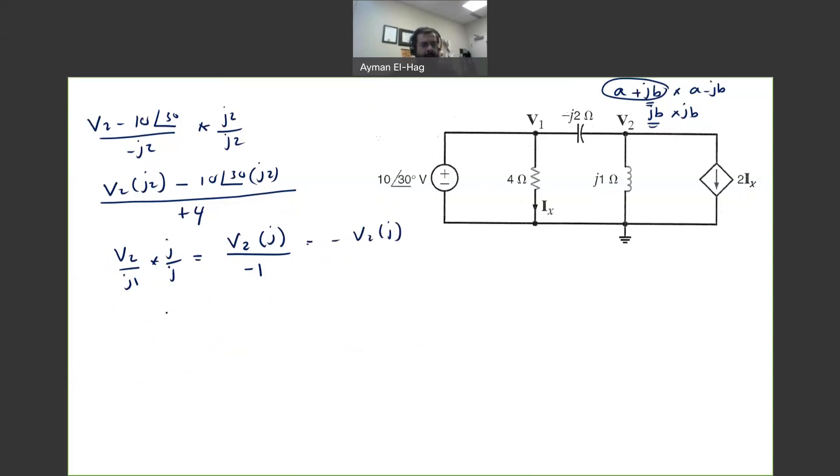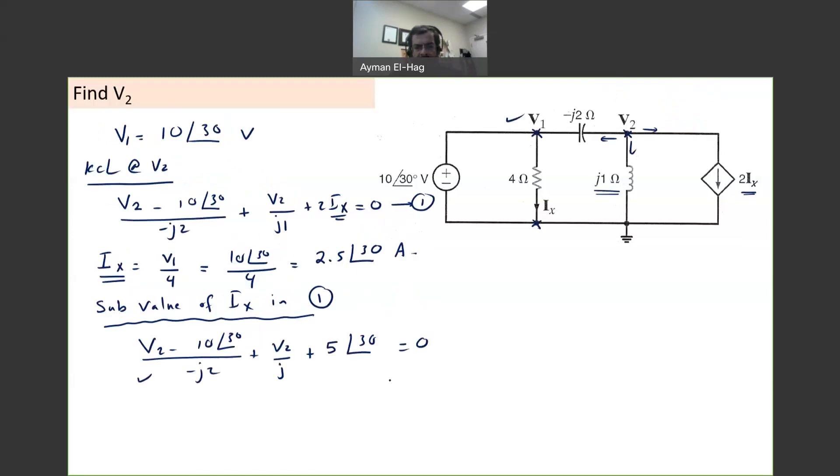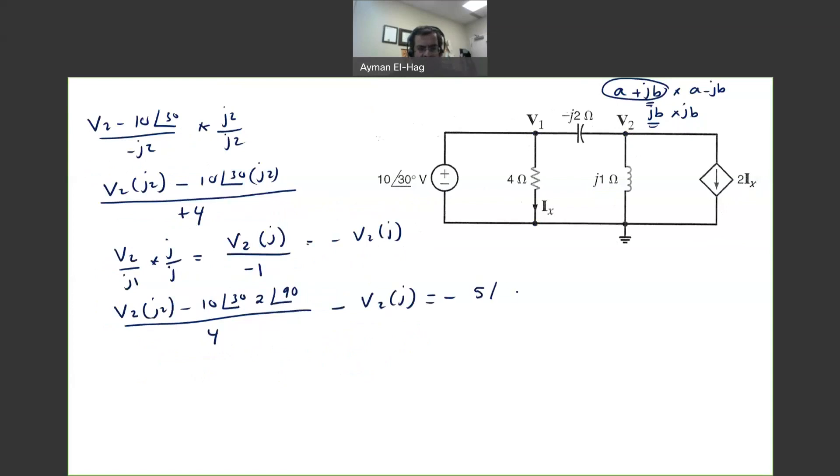So now we are set to rewrite the equation. So we will have V2 times j2 minus 10, I'm just rewriting this equation, angle of 30. Now j2 is nothing but 2∠90°. Divided by 4 minus V2 times j. So what I will do here, I will take this here. So this will equal to -5∠30°.